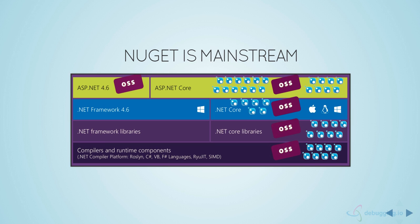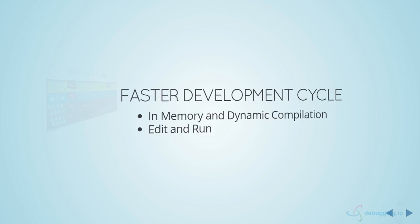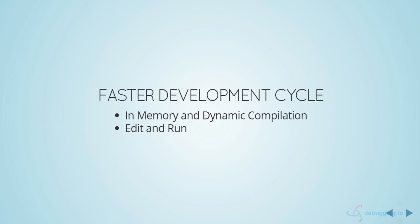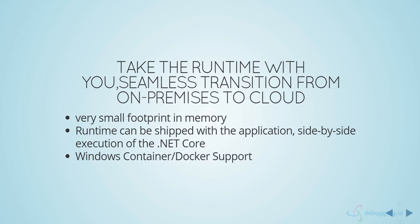ASP.NET Core offers a faster development cycle with in-memory and dynamic compilation. It has an edit-and-run feature: you edit your code, refresh the browser, and it automatically picks up the latest code and runs it. These features are built into the ASP.NET Core runtime, enabling a rapid write-code, debug, run cycle — a significant improvement that ASP.NET Core brings.